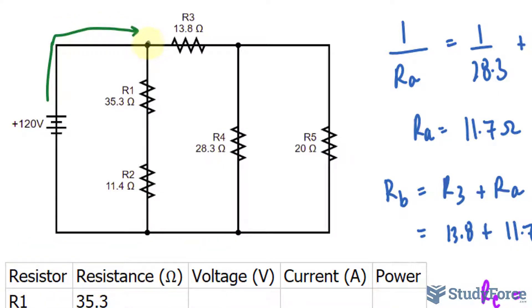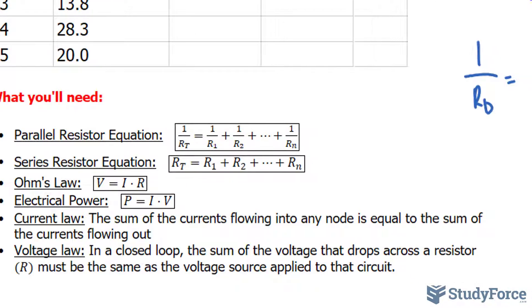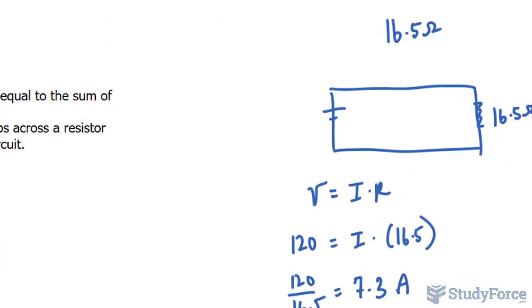We know that there is 7.3 amperes flowing in this direction into that initial node, and the same amount of current should be flowing out of this node back to the battery, back to the power source. The voltage law says that in a closed loop, the sum of the voltage drops across resistors must be the same as the voltage source applied to that circuit. Let's apply these two laws.